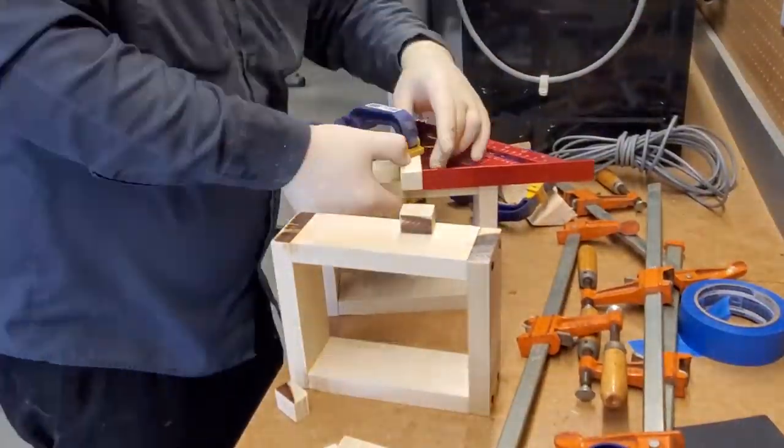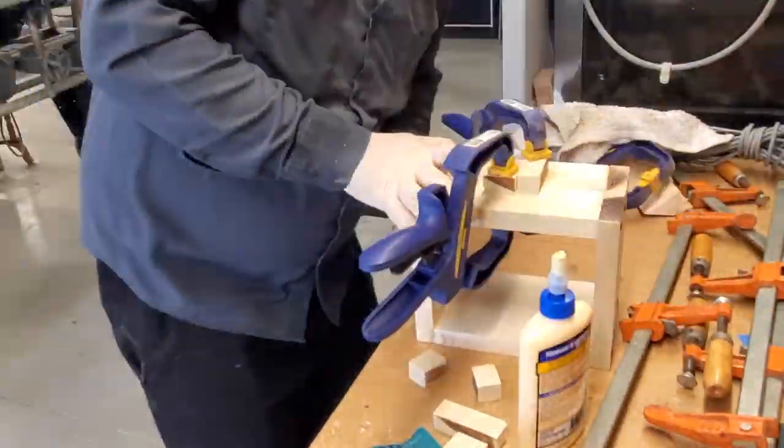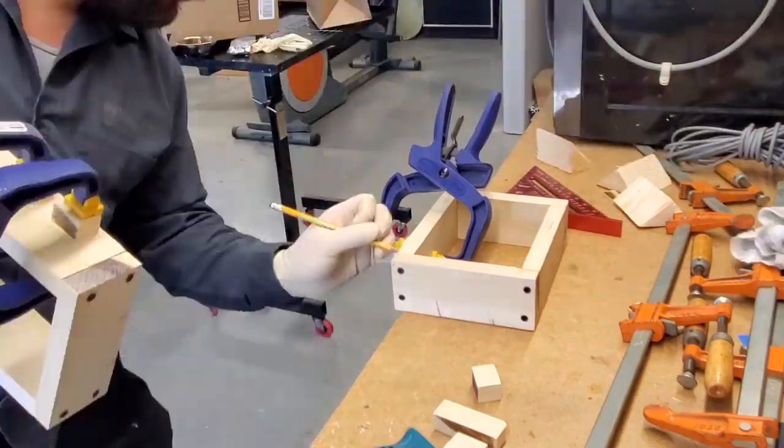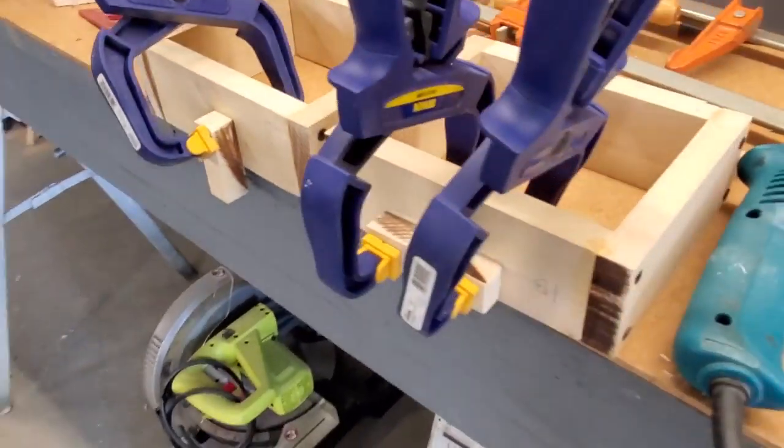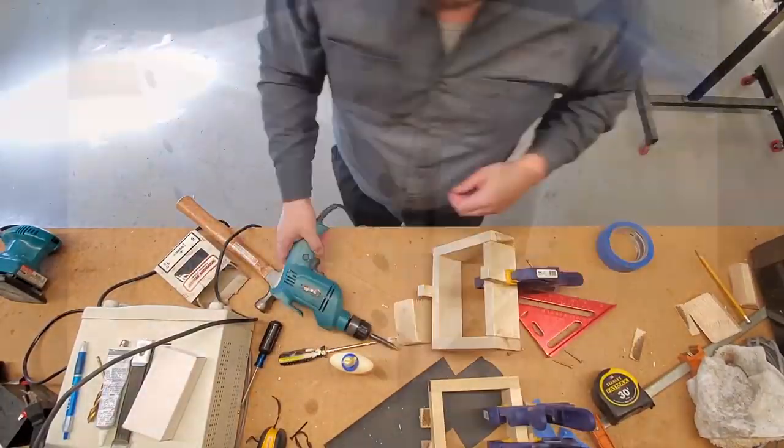To keep the box centered on itself, alignment tabs are glued and screwed to the sides using leftover material. Alignment is checked and the cope and drag are complete.